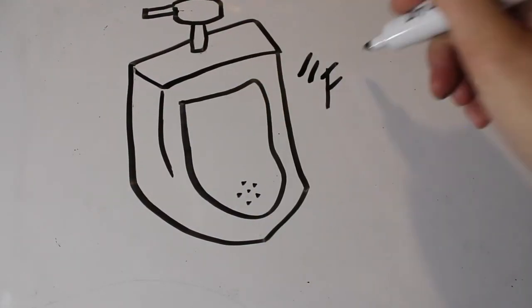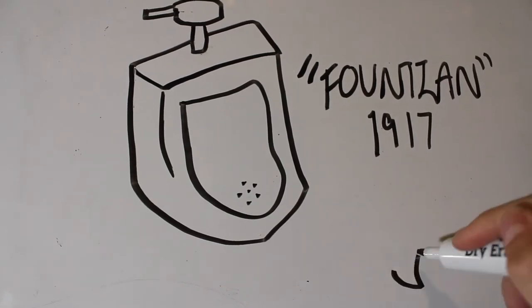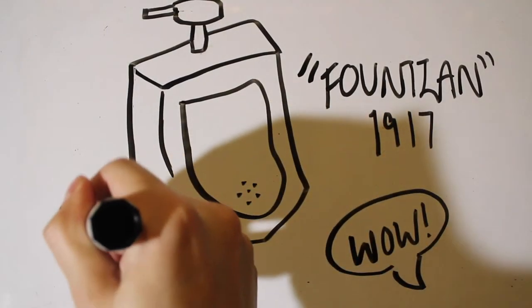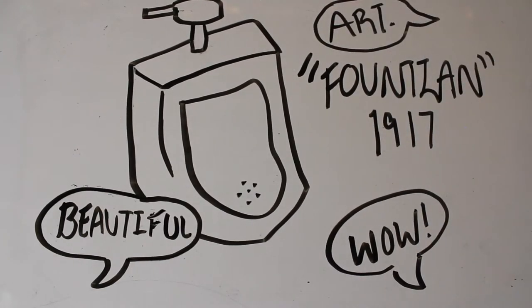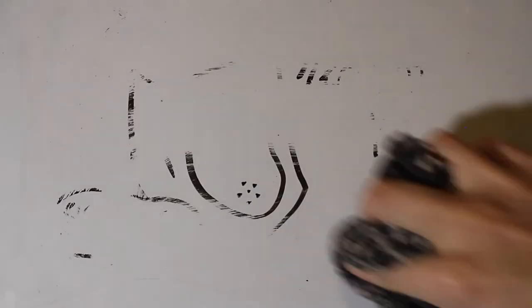This urinal sculpture specifically is called Fountain, made in 1917. It is one of the most notable pieces from this era. It was considered a landmark for these avant-garde ready-made sculptures.